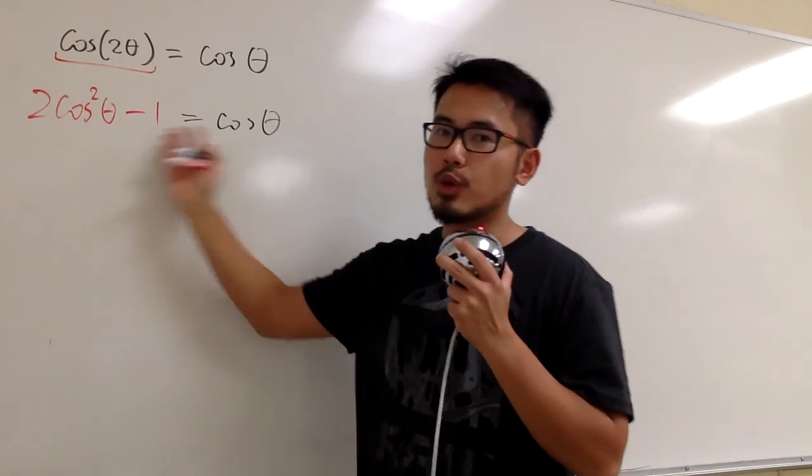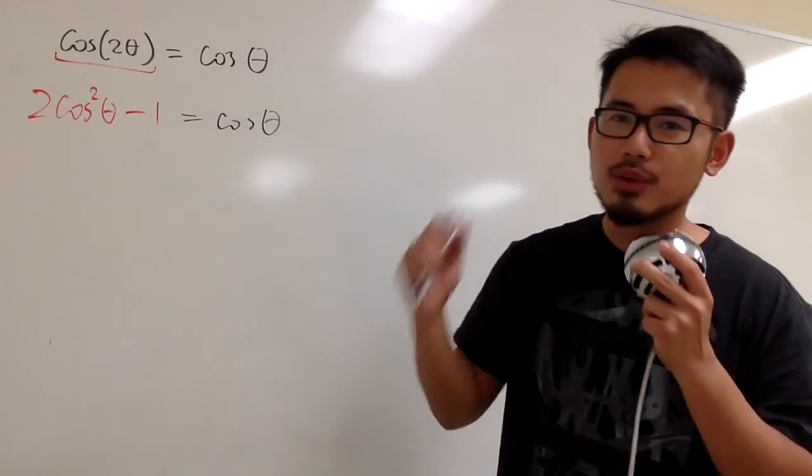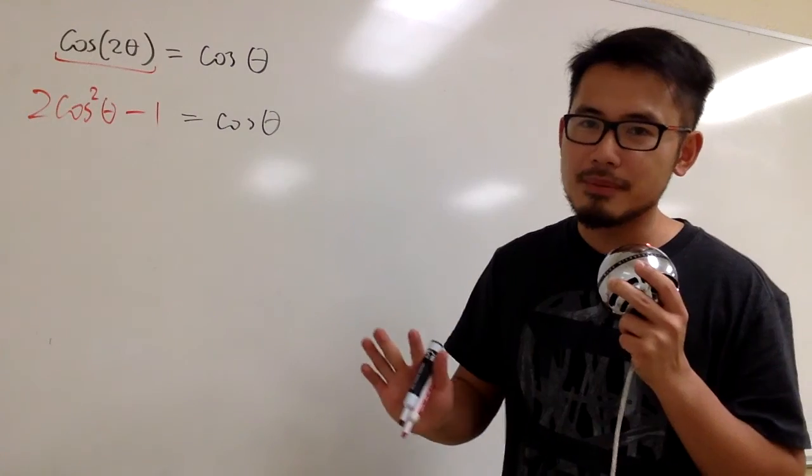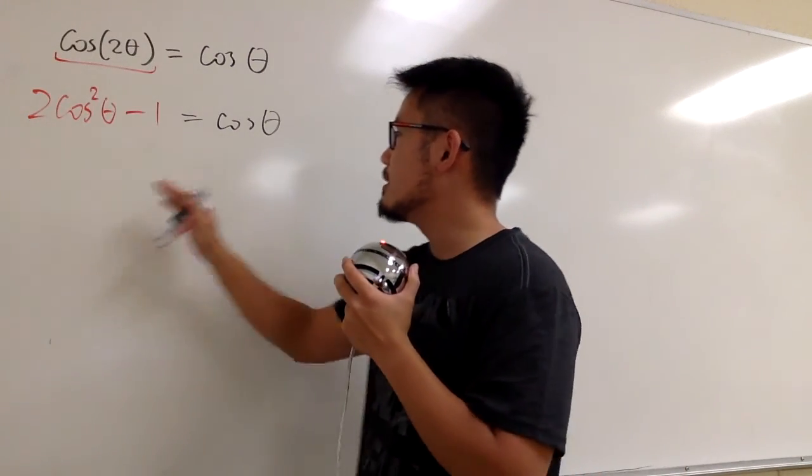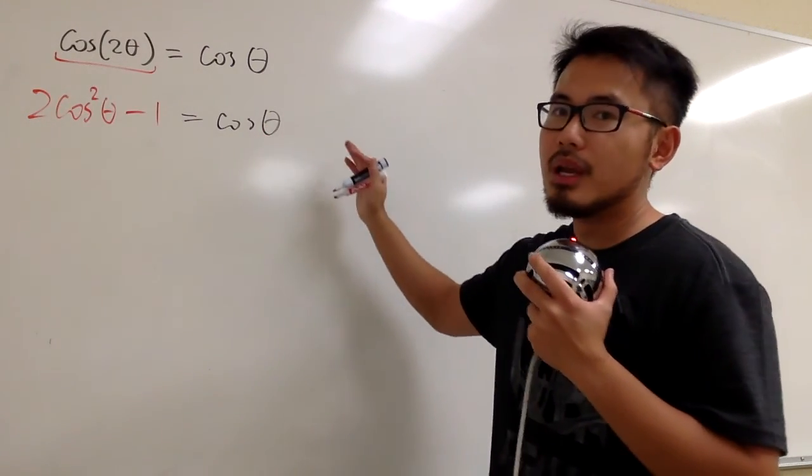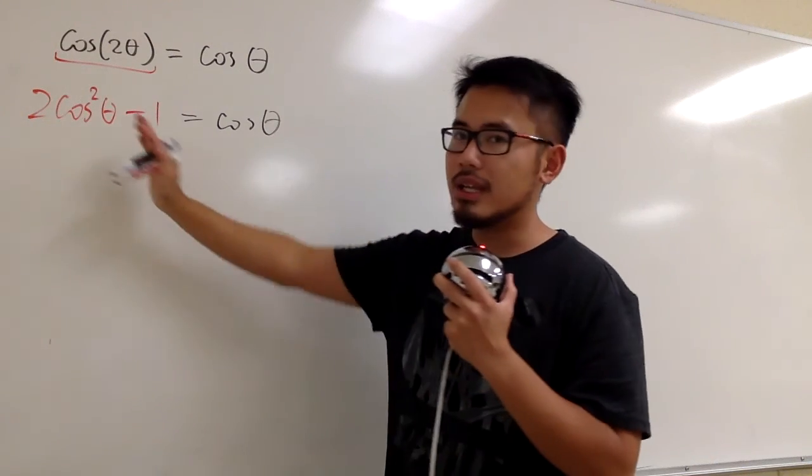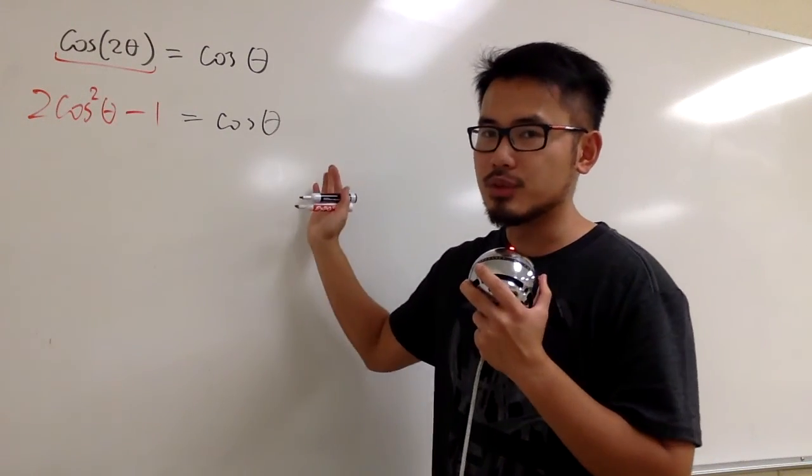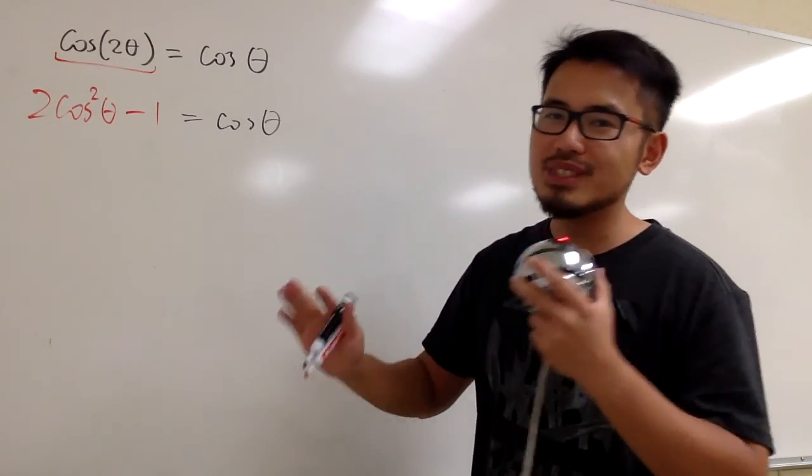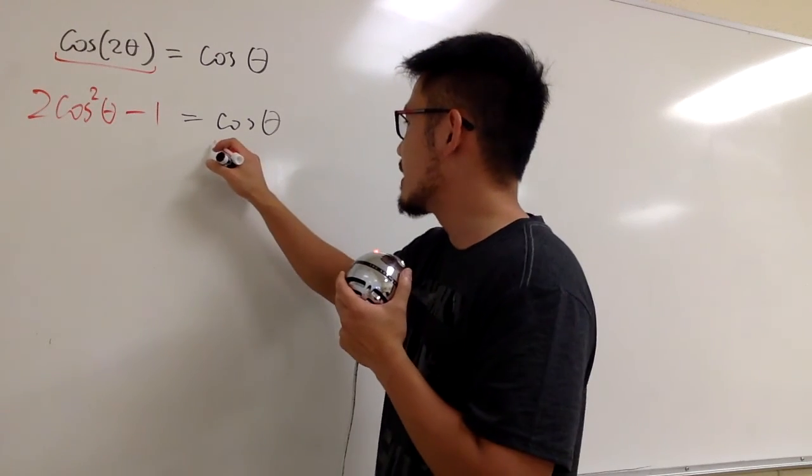And you see, we end up with a quadratic equation in terms of cosine θ. So this is okay. I know this is cosine squared, this is only cosine to the first power. But then, if we move this to the left-hand side, make one side equal to 0, we factor it, everything will work out nicely.